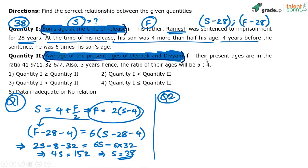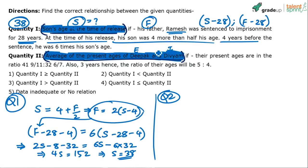Their present ages are in the ratio of 41 and 9/11 to 32 and 6/7. We have to first work on this. Let's say the age of Deepak is E and the age of Divya is I — using the next character since we can't use D and D for both.